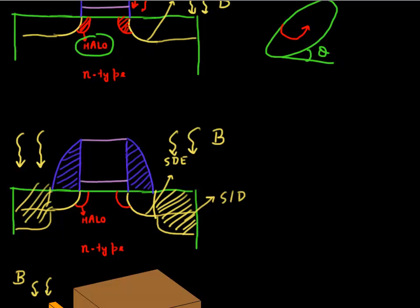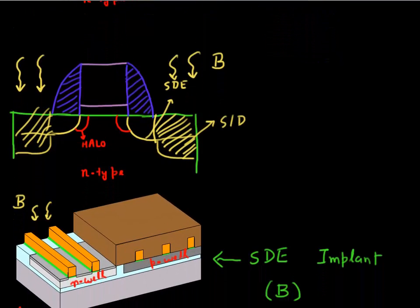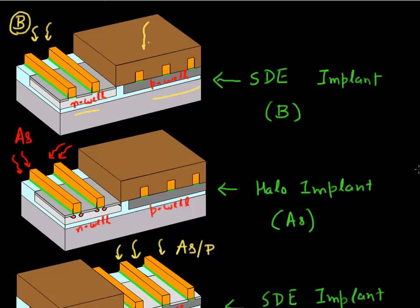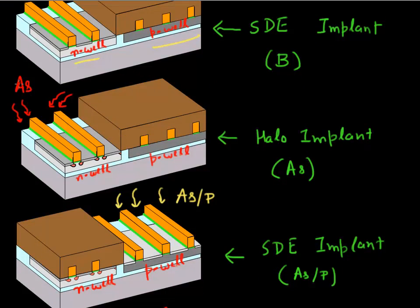In 3D, you have your P-well and N-well regions. You cover the P-well region and do the source drain extension implant in the N-well, implanting boron to form the source drain extension. Then you implant arsenic at an angle — say a 30 degree angle — and this forms the halo region.